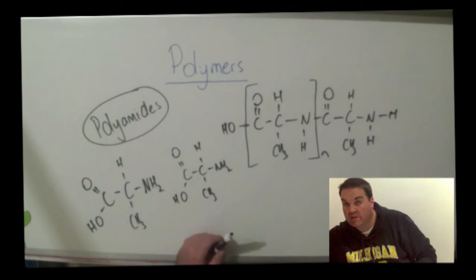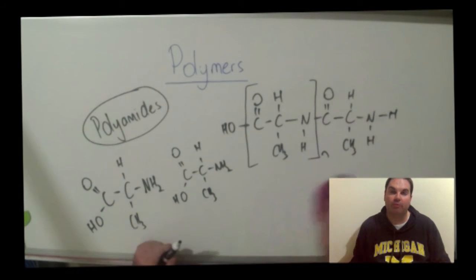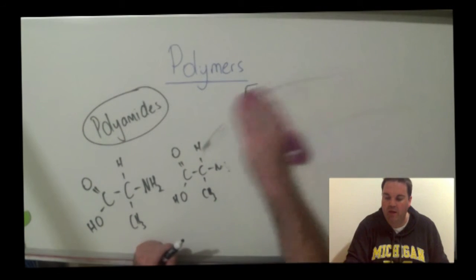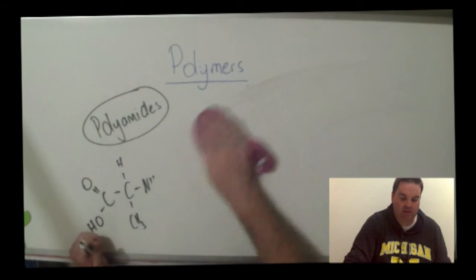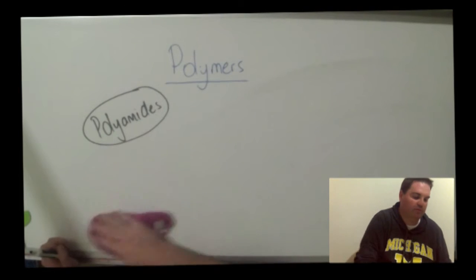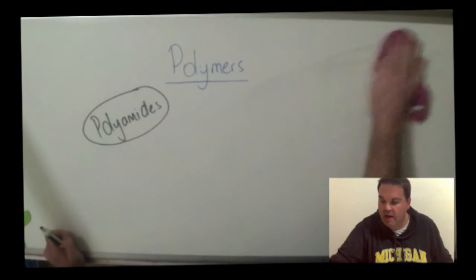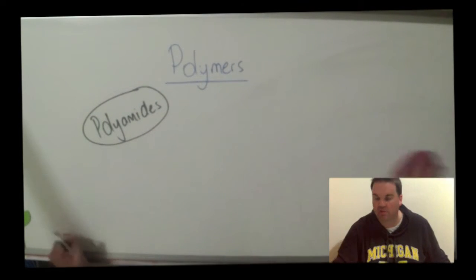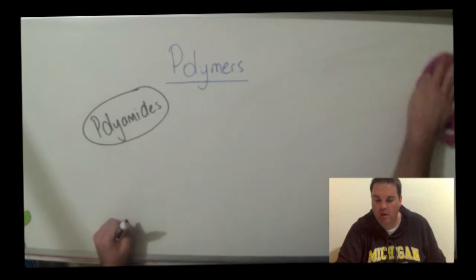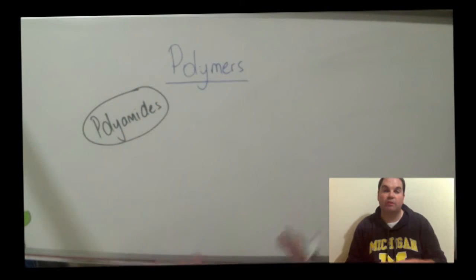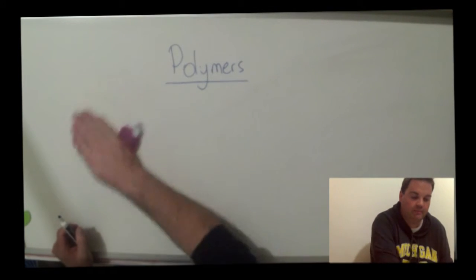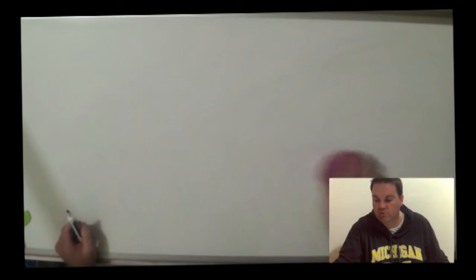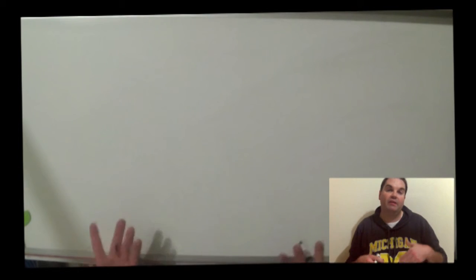When drawing your polymers in the exam, I suggest you use a scrap piece of paper. Put the monomers next to each other, then rub out the hydrogen and oxygen or nitrogen — whatever needs to be removed — and you can make your polymer really easily. Now I'm going to show you how to go backwards: draw up a section of a polymer, find the repeating unit, then work out what your monomers are.